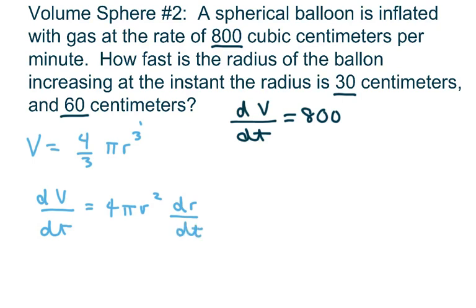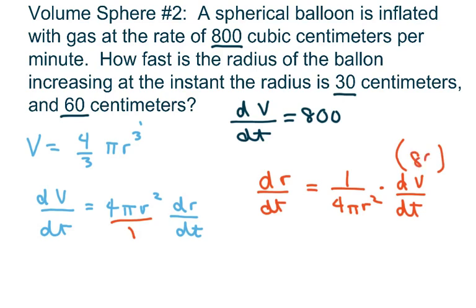Now, what we're trying to find is the derivative of r. So basically, what I'm going to do is cross multiply here and I get the derivative of r with respect to time equals 1 over 4π r² times the derivative of the volume with respect to time, which we already know is going to equal 800.